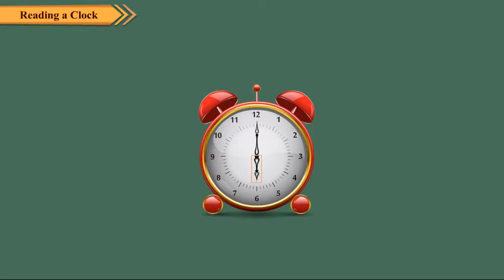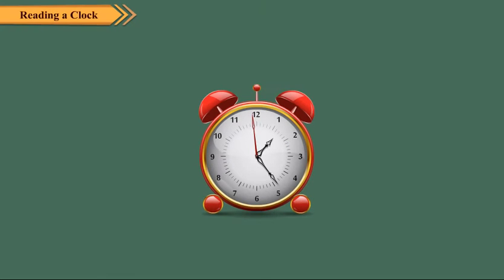The shortest hand is called the hour hand. It moves the slowest. It takes one hour to go from one number to another. All the hands move as shown here. It is called clockwise movement.